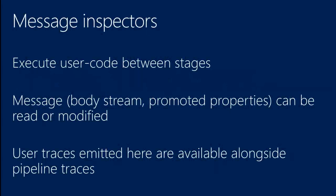Message inspectors execute user code between stages. When your message inspector is called, it has access to your message — which means it has access to the body of the message and the promoted properties. You can both read and write, which means you can completely change the body, promote your own property, or remove a promoted property from your inspector code.